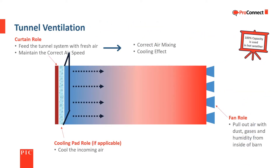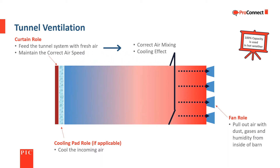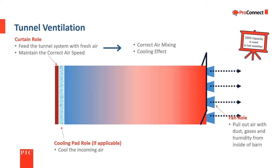Many barn designs use ceiling inlets during cooler weather and tunnel ventilation during hot weather. Tunnel ventilation moves a larger amount of air through the building and creates higher air speed at the pig level to provide additional cooling effect. The fans pull out the dust, gases, and humidity. A curtain at the opposite end of the barn from the fans raises and lowers to regulate the air speed entering the barn, which helps maintain the correct air mixing and cooling effect. An evaporative cooling pad may be used to cool the incoming air.